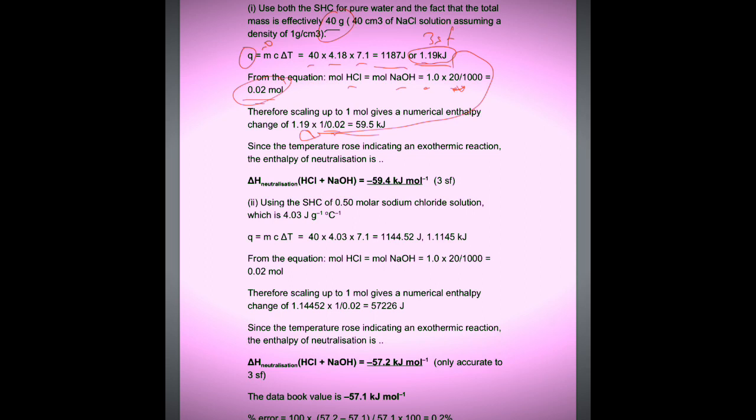Since the temperature rose, it's exothermic. We'll put a negative sign, and here is our answer, 59.5 kilojoules per mole. I've not got the calculator with me. We're not going to fall out about that, I hope.